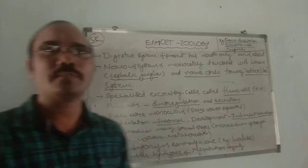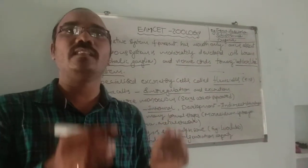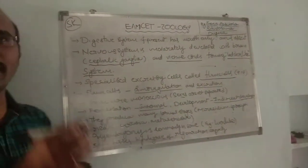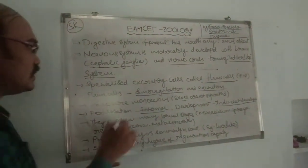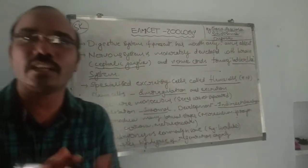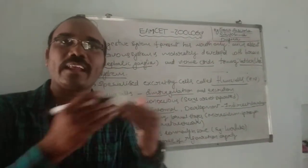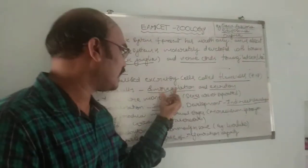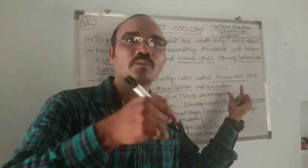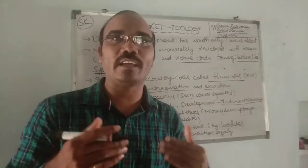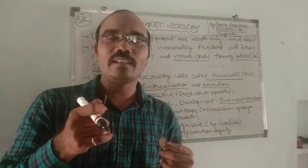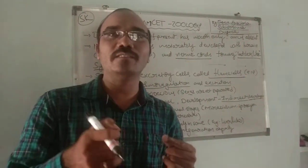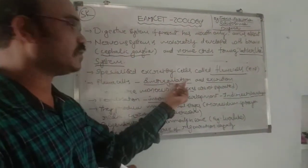They have specialized cells for excretion called flame cells. These flame cells are used for osmoregulation and excretion — to excrete waste material from the body. They also participate in osmoregulation by maintaining water levels and salt ions in the body.